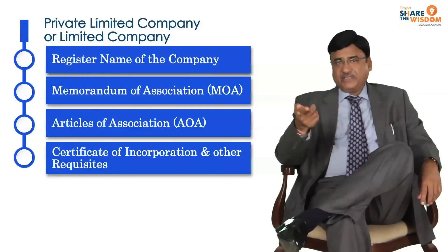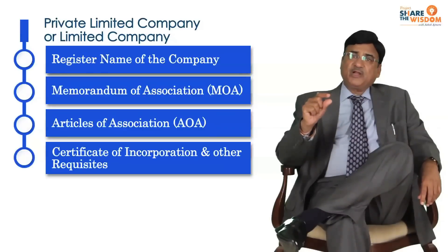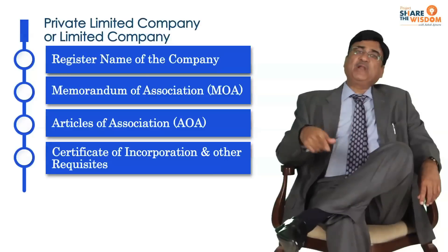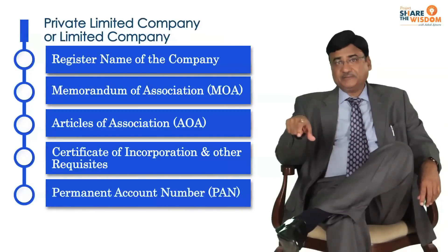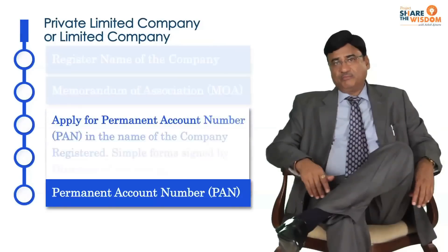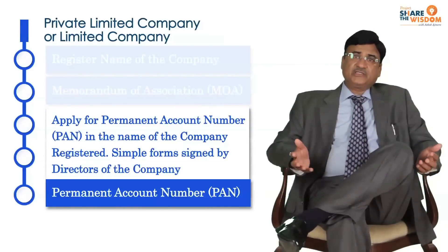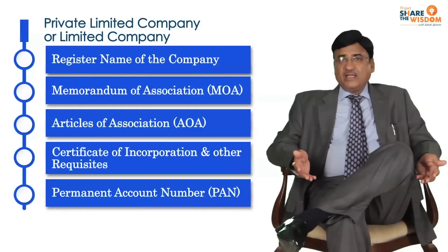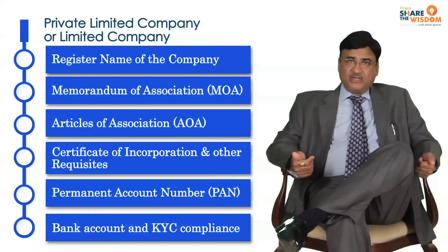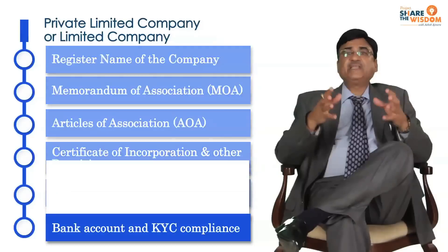After the certificate of incorporation, along with a copy of the memorandum and articles, you apply for the permanent account number for income tax in the name of the company. There is a standard form to be signed by the designated or authorized directors and submitted online. After receiving the permanent account number, you are fully geared and ready for opening a bank account to fulfill KYC norms.